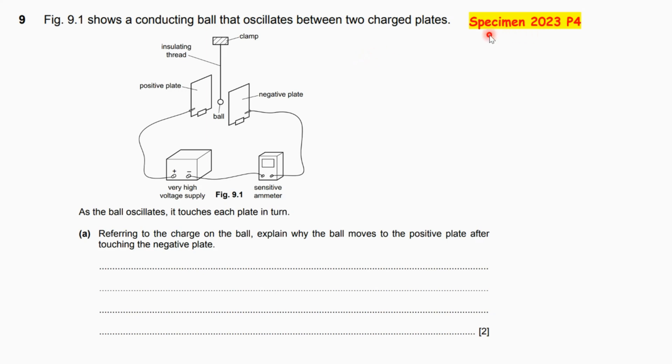Hi guys and welcome to a physics series. Today we have a specimen 2023 paper 4 question 9. Figure 9.1 shows a conducting ball that oscillates between two charged plates. As the ball oscillates it touches each plate in turn.